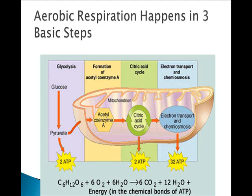The Krebs cycle happens in the center of the mitochondria in the matrix, which is similar to the stroma in the chloroplasts. The electron transport chain — more formally called chemiosmotic phosphorylation — happens on the inner membrane of the mitochondria. That's why you have such a big folded membrane: it gives more surface area to make more ATP. This is where the huge amount of energy is produced — 32 net ATP — and it also uses oxygen as the final electron acceptor.